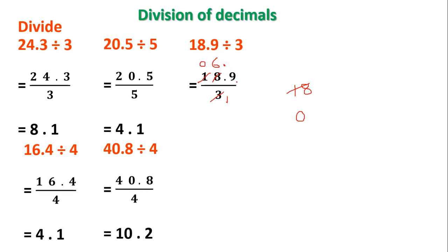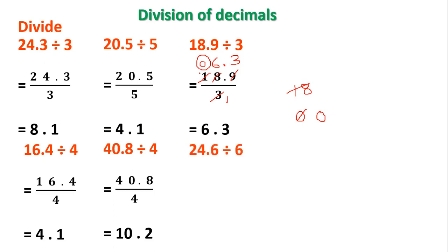The decimal part is 9. 3 threes are 9; I write 3; 9 minus 9, remainder is 0. The quotient is 06.3; the leading 0 has no value, so I write only 6.3. Let's take the next one: divide 24.6 by 6. Write the dividend in the numerator and the divisor in the denominator.